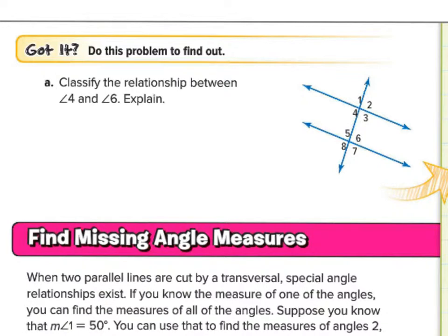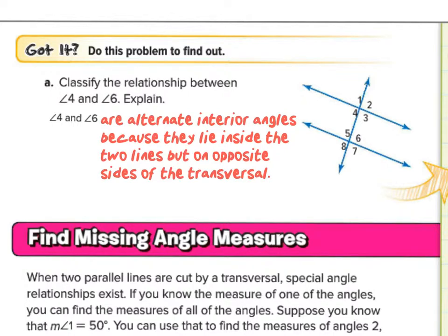Let's classify the relationship between angle four and angle six. Angle four is right in here, and angle six is on the other side — they're both between the parallel lines. They're both interior angles and they're opposite of one another, so we can say alternate. Pause the video and write your answer down. Angle four and angle six are alternate interior angles because they lie inside the two lines but on opposite sides of the transversal.